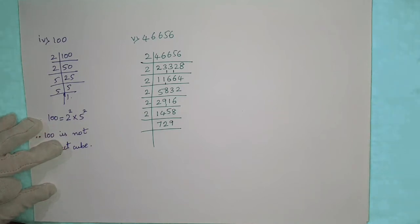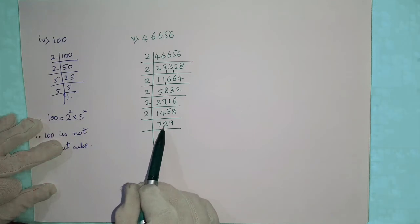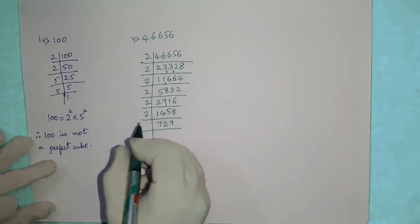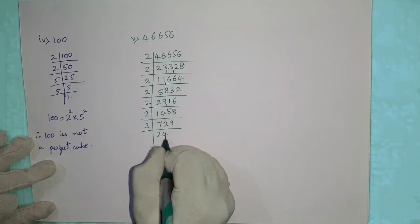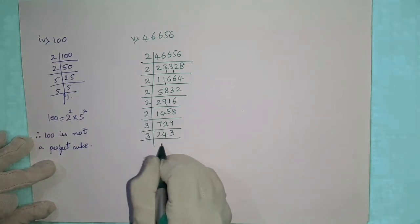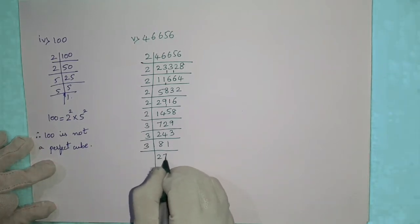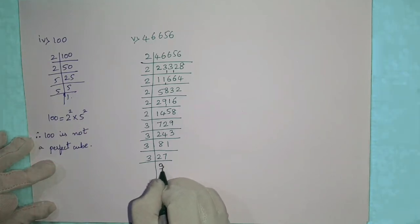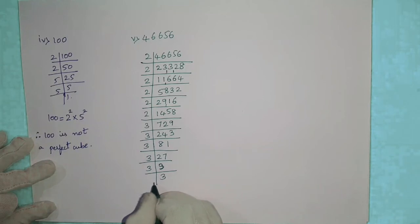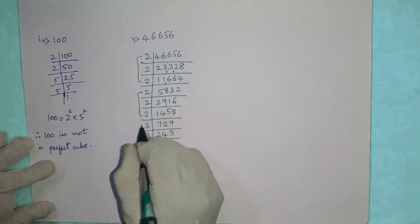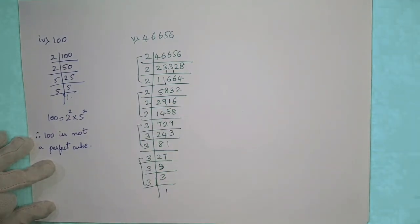For 729, we check divisibility by 3: adding the digits, 9 plus 2 is 11, and 11 plus 7 is 18, which is a multiple of 3. So we divide by 3 repeatedly. We find that 2 appears three times, and 3 also appears three times — all factors are in groups of three.